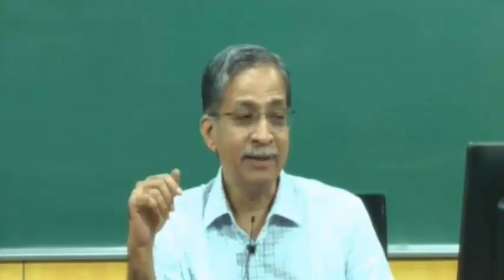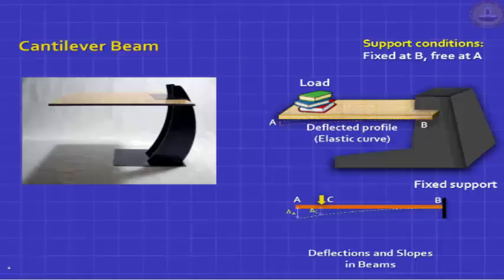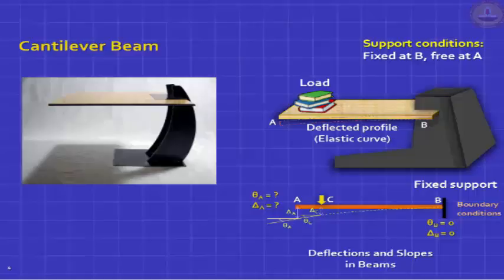The radius of curvature is infinite at A (since AC is straight), then slowly becomes finite, and at B becomes the smallest. These are called deflections and slopes. Deflection is shown as delta_A, delta_C; slope as theta_A, theta_C. The boundary conditions mean delta_B and theta_B are both zero. The curvature at B is maximum, but the slope and deflection there are zero.